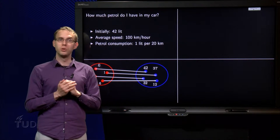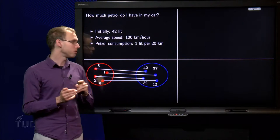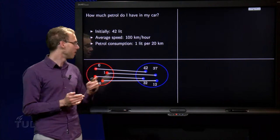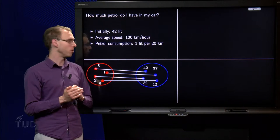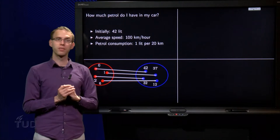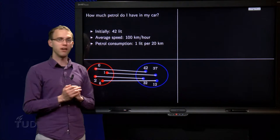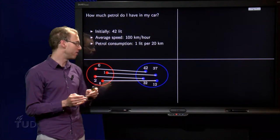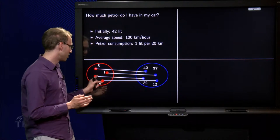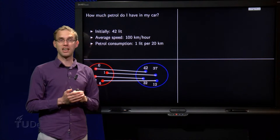Now it depends on the number of hours I've been driving. We can draw that as follows. Suppose I've been driving 0 hours, then I will still have 42 liters of petrol. After 1 hour I will have 37 liters. After 2 hours I use again 5 liters of 32 liters, and after say 6 hours I have 12 liters left.